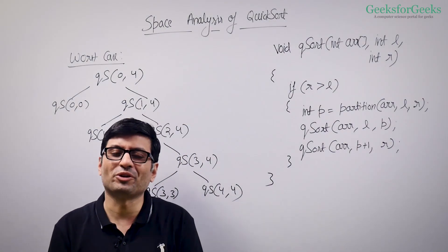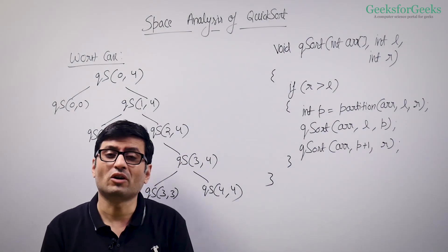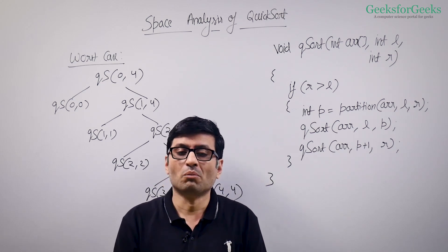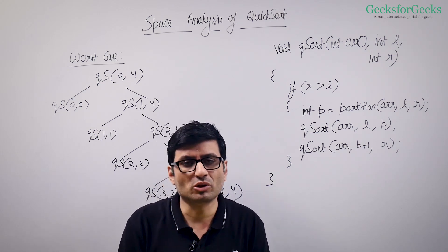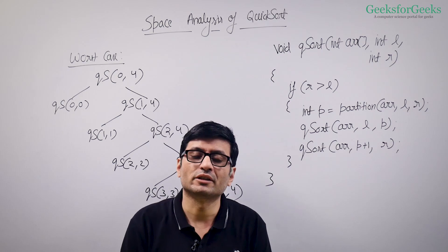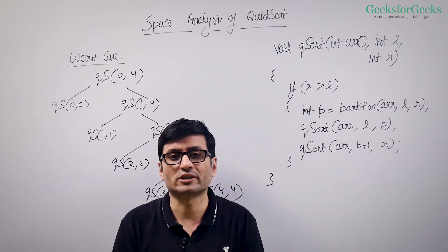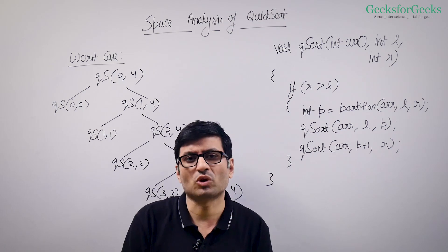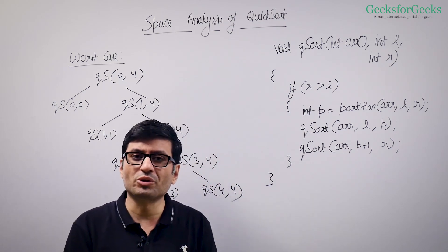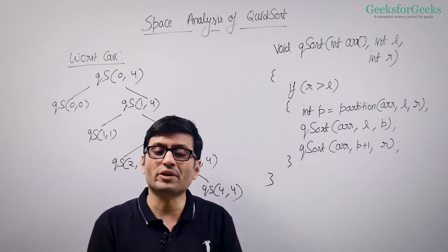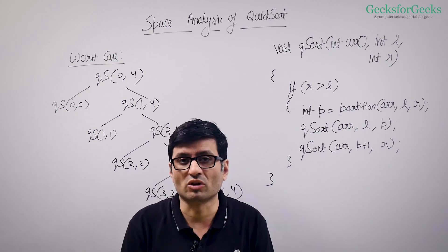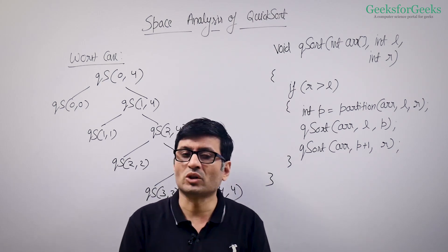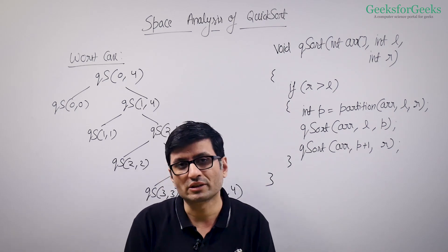In this video, we are going to talk about auxiliary space analysis of quicksort. Most textbooks and the Wikipedia page say that quicksort is in-place. However, this is arguable — it depends on how you define in-place. If you define in-place as an algorithm that takes constant extra space, then quicksort is definitely not in-place.